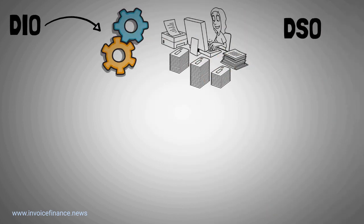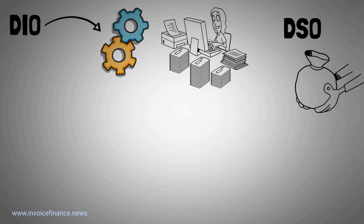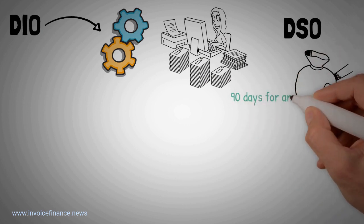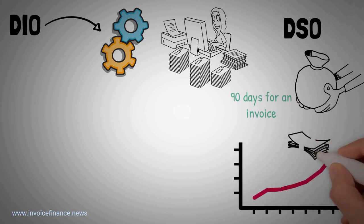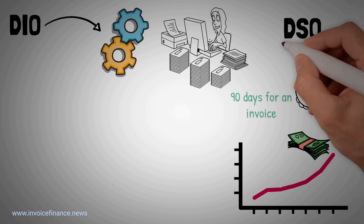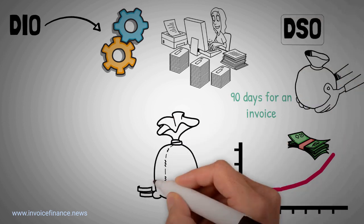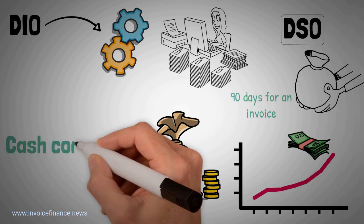DSO is a reflection of the amount of time it takes for customers to pay for products. Clearly, waiting 90 days for an invoice to be paid means a company has its money tied up when it could be put to better use. One way to reduce DSO is to use a factoring company that will release cash quickly back into the cash conversion cycle.